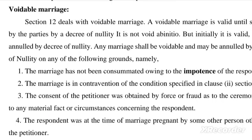Next is void and voidable marriage. Section 12 deals with voidable marriage. A voidable marriage is valid until set aside by the parties by a decree of nullity. It is not void ab initio; initially it is valid but can be annulled by a decree of nullity. Any marriage shall be voidable and may be annulled by a decree of nullity on any of the following grounds.